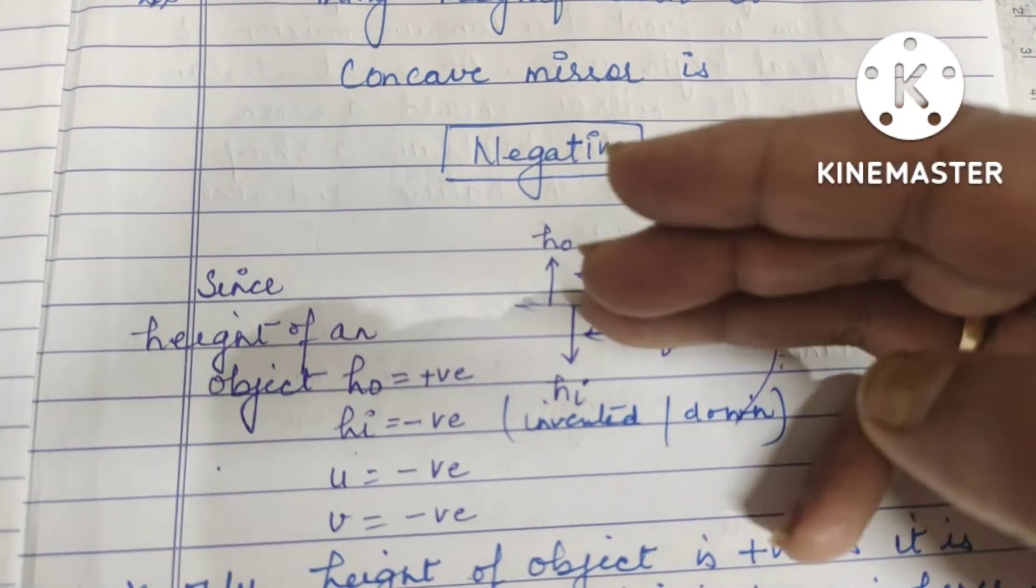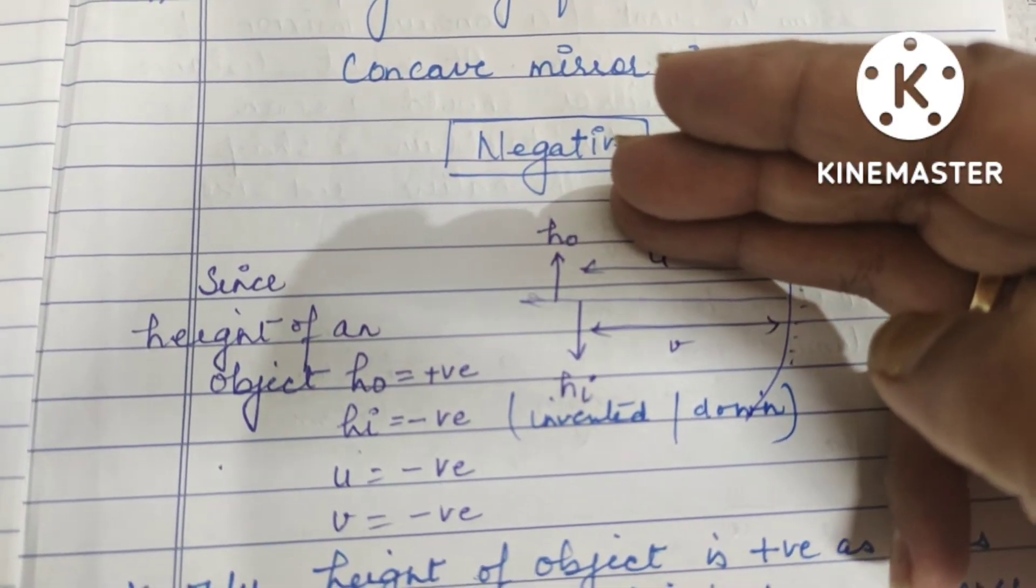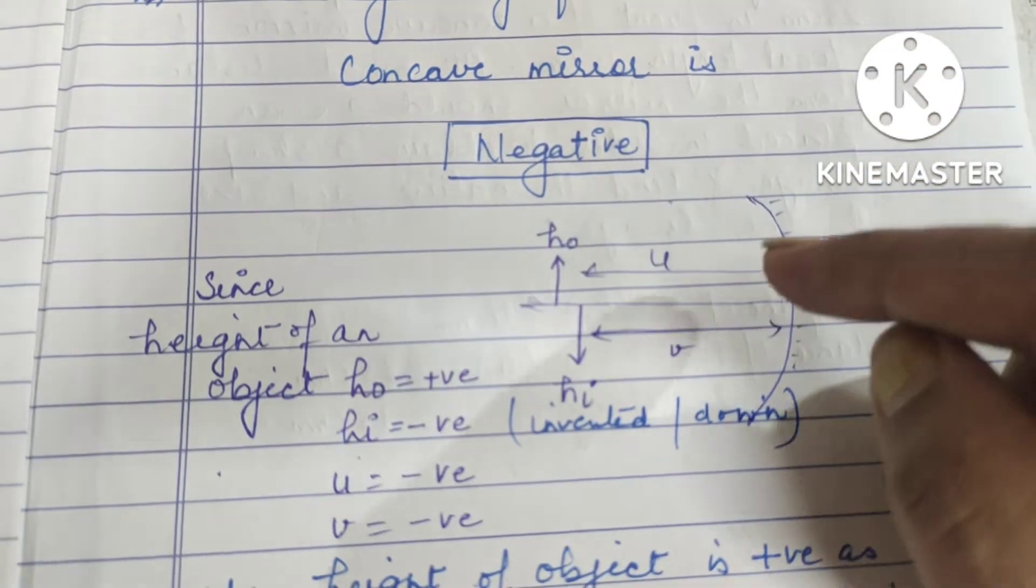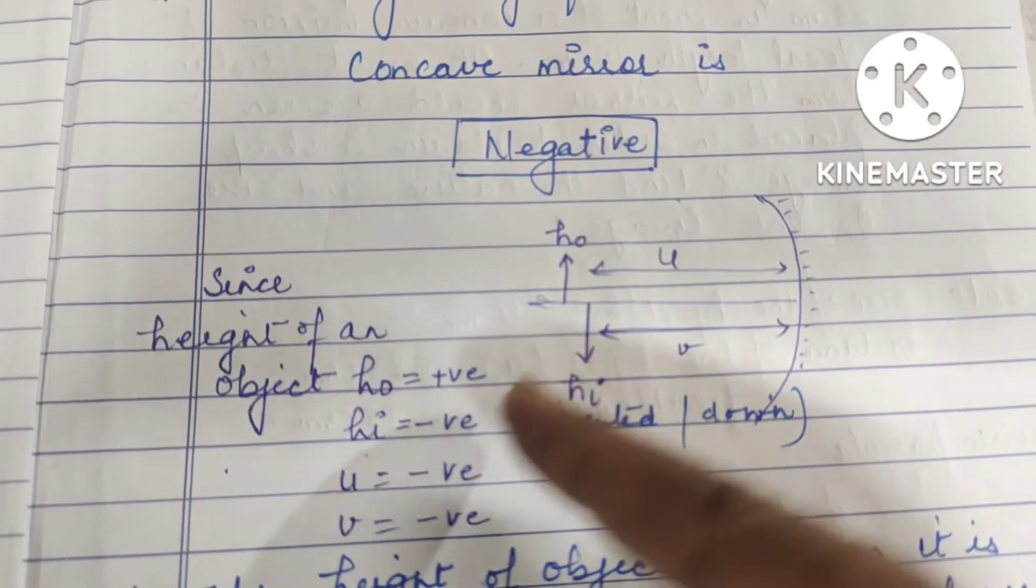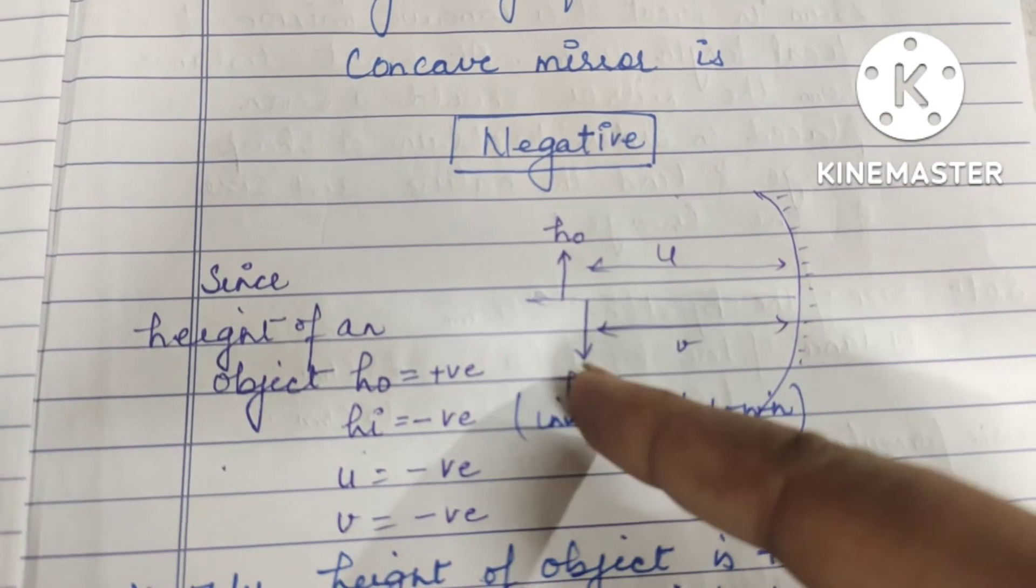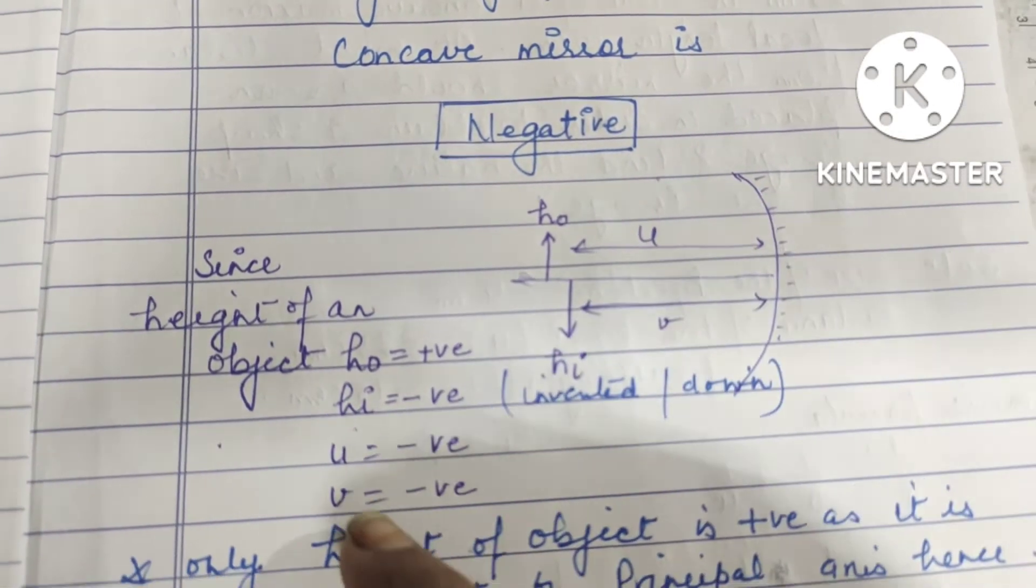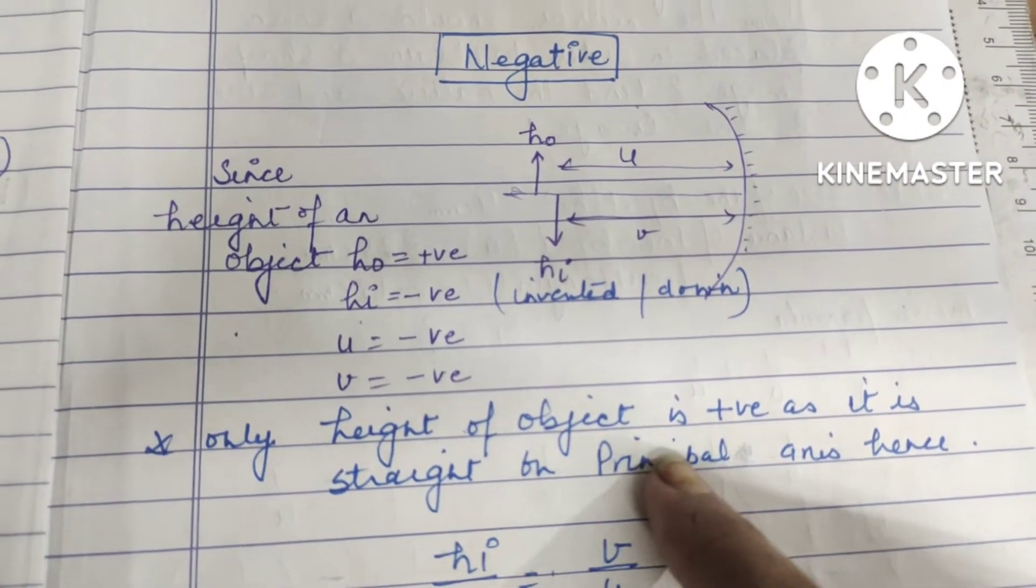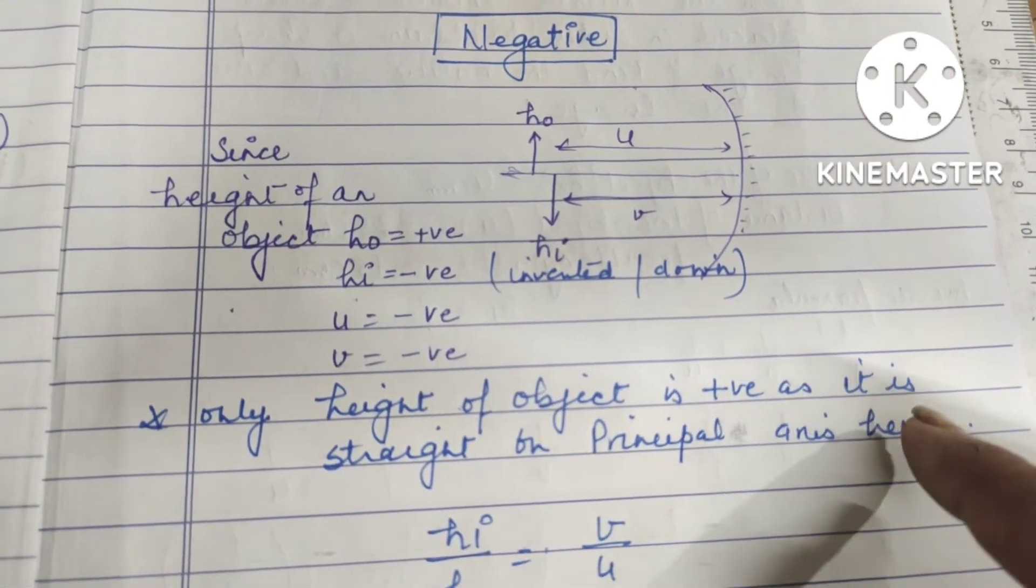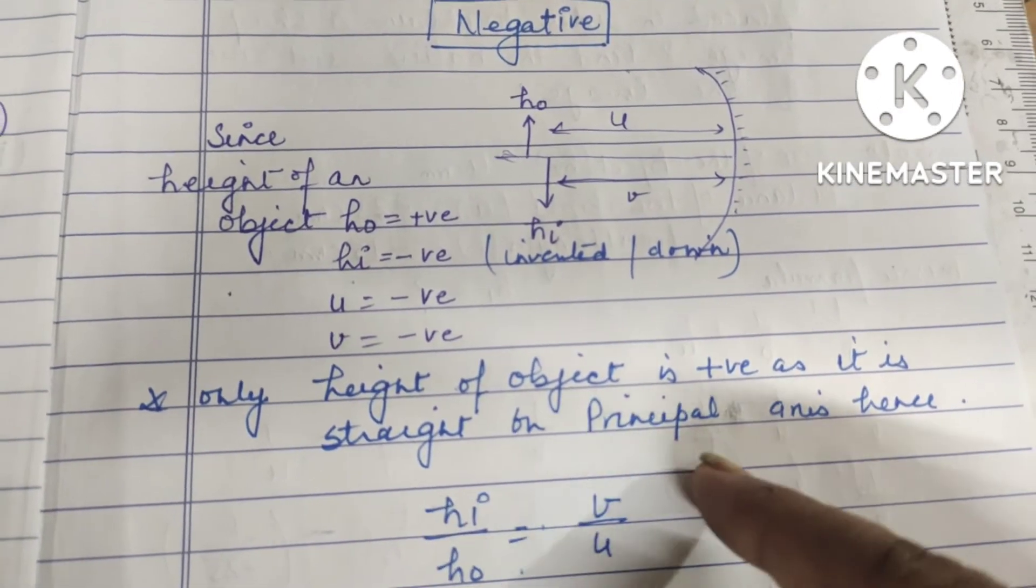Rest everything is negative. Height of the image, since it is coming downward, is also negative. u is also negative, v is also negative. Only the height of the object is positive as it is straight on the principal axis.